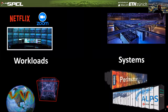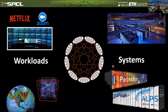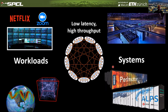One thing that these workloads have in common is the fact that they produce an enormous amount of data that needs to be exchanged fast, either because of quality of service constraints or to make simulations more efficient. As a consequence, one critical component of these systems is the interconnection network, for which we can synthesize the requirements as low latency and high throughput.